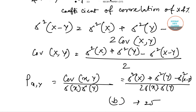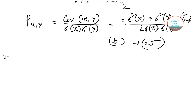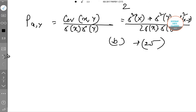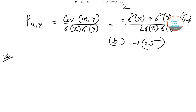This gives us: rho(x,y) equals sigma square x plus sigma square y minus sigma square (x minus y), divided by two times sigma x multiplied by sigma y. That gives us option B. So for question number 25, option B is the correct option. Now we will move on to question number 26.